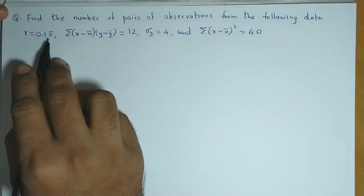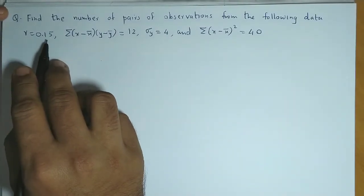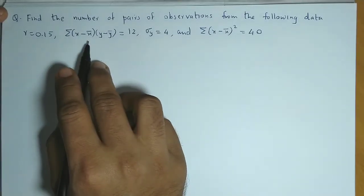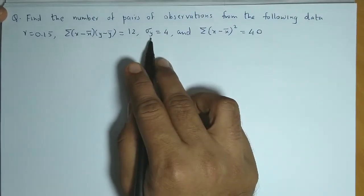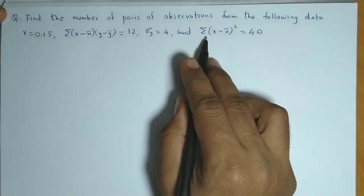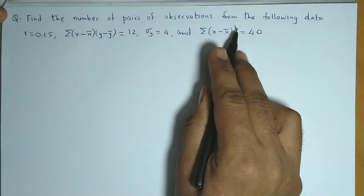The correlation coefficient r is 0.15, summation of (x - x̄)(y - ȳ) is 12, standard deviation of y is 4, and summation of (x - x̄)² is equal to 40.